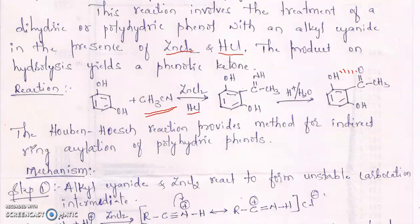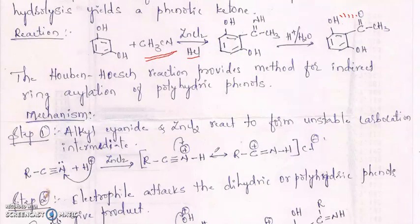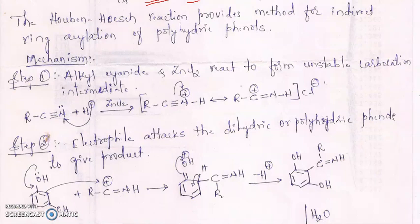The Hoesch reaction provides a method for indirect ring acylation of polyhydric phenols. Now we discuss the mechanism. Step one: alkyl cyanide and zinc chloride react to form an unstable carbocation intermediate. Here we have the alkyl cyanide — R can be an alkyl or aryl group. The lone pair of electrons on nitrogen are donated to the hydrogen of HCl to form an N-H bond, giving R-C≡N-H.